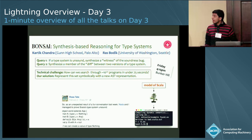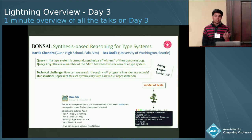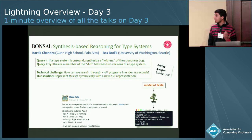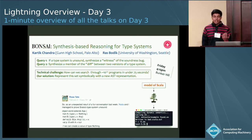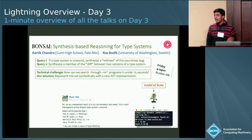Recently, Ross Tate and Nada Amin found a Scala program that compiles just fine, but when you run it, it crashes the JVM. Finding programs like this is hard — we hope it would be hard. In my talk, I'm going to describe a tool we built called Bonsai, which automatically finds programs like this. We call them counterexample programs, because they're counterexamples to the claim of soundness. Bonsai finds bugs that other automatic tools can't find, and it lets you ask some pretty interesting questions about type systems. Come to the talk.